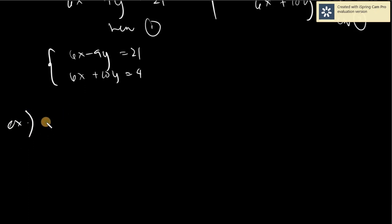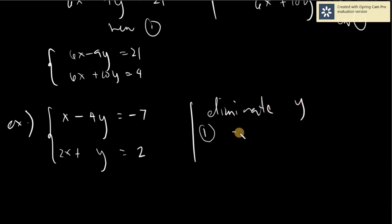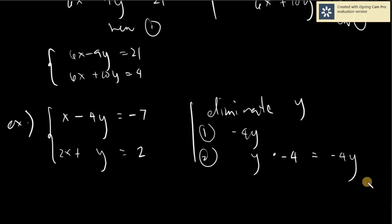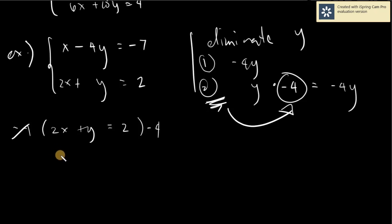Let's have another example. x minus 4y equals negative 7, and 2x plus y equals 2. You want to eliminate y. You check: equation 1 has negative 4y, equation 2 has y. So which one would you balance? Of course the second — multiply it by negative 4 to give negative 4y, the same as equation 1. So multiply the entire second equation by negative 4: 2x plus y equals 2 times negative 4, giving negative 8x minus 4y equals negative 8.